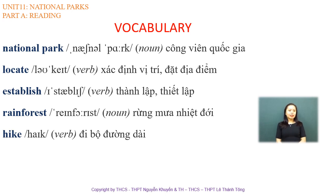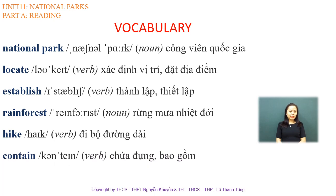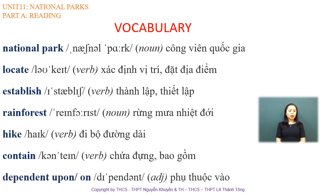'Hike' is a verb with just one syllable, so you don't need to mark the stress. It is also a noun. 'Contained' is a verb and the stress is on the second syllable. 'Dependent' — the adjective form — you can say 'dependent upon' or 'dependent on'; they are the same.